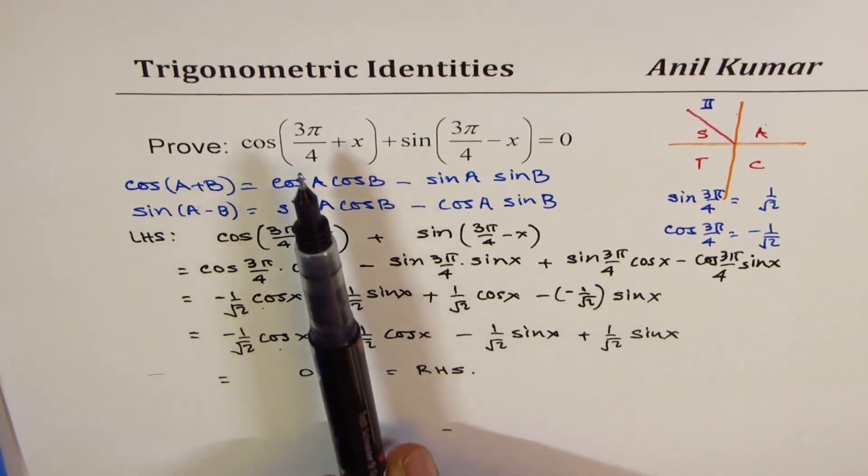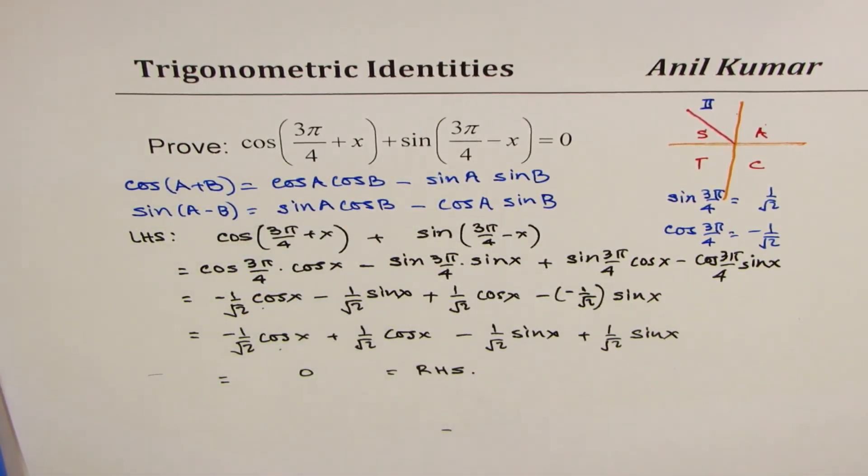So whenever you have angles involved, especially when you have special triangle angles involved, you can substitute their values and then figure it out.